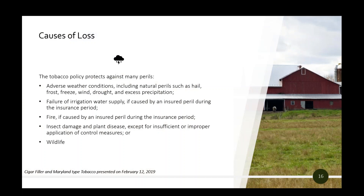Many things can damage a crop, but not all are insurable. Tobacco is protected against loss due to weather events like hail, frost, freeze, wind, drought, and excess precipitation. If caused by an insured peril, tobacco is also protected against failure of water supply and fire. Insect damage and plant disease not caused by improper measures, as well as wildlife, are also perils that the tobacco policy protects against.